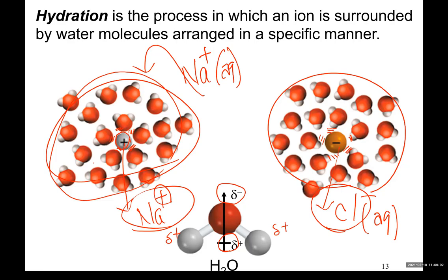But when you see partial ionization, this is not the case. The ions are not stable enough, they find each other and go back to the neutral molecule.